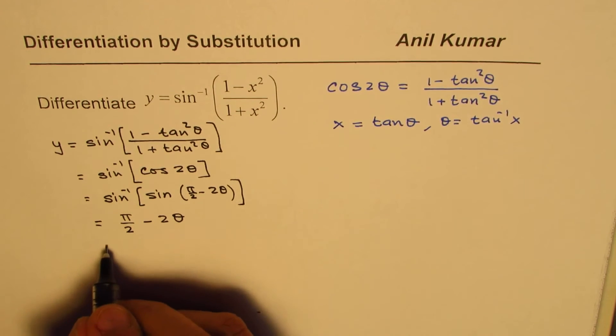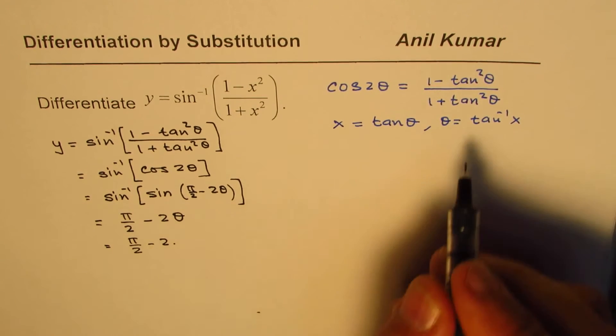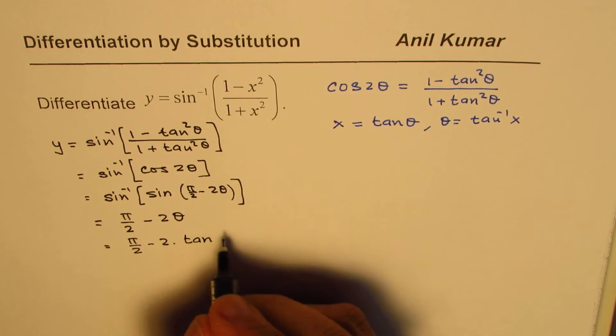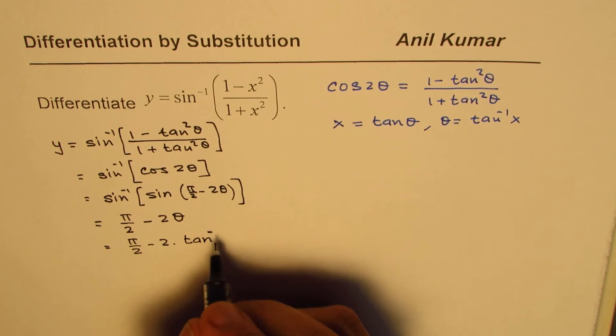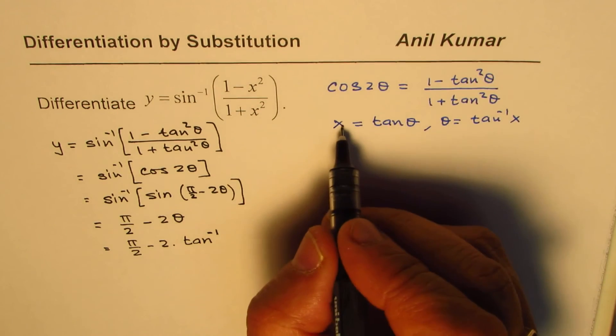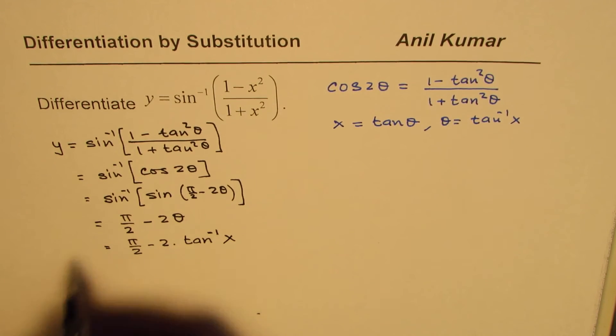Now we know what θ is. So we can write this as π/2 minus 2 times θ, which is tan inverse x. So tan inverse x. That is y.